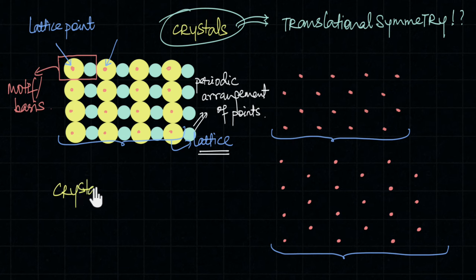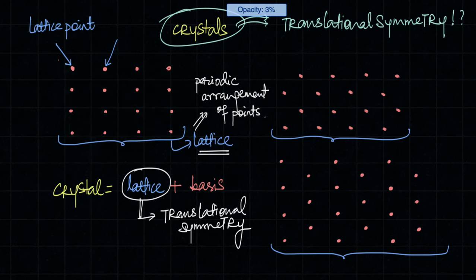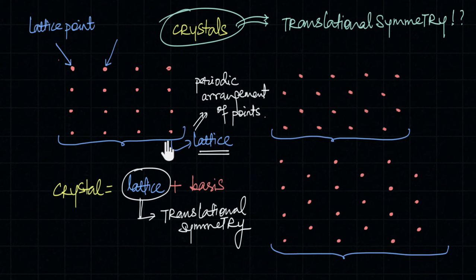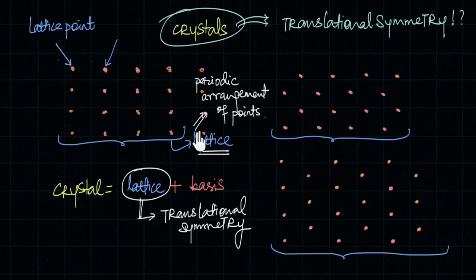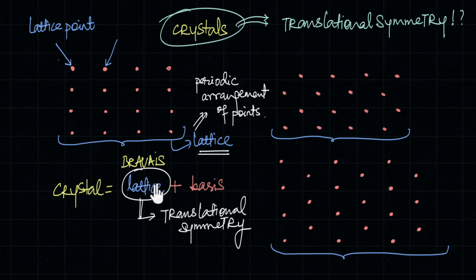A crystal equals the lattice plus the basis. The lattice gives the underlying translational symmetry of the crystal, and only when we add the basis do we get the actual physical crystal. Mathematically, there are many different kinds of lattices — many ways of arranging points with periodicity. However, in crystals, the lattice always has translational symmetry when going from one lattice point to any other. These special lattices are called Bravais lattices, named after the French mathematician Auguste Bravais.